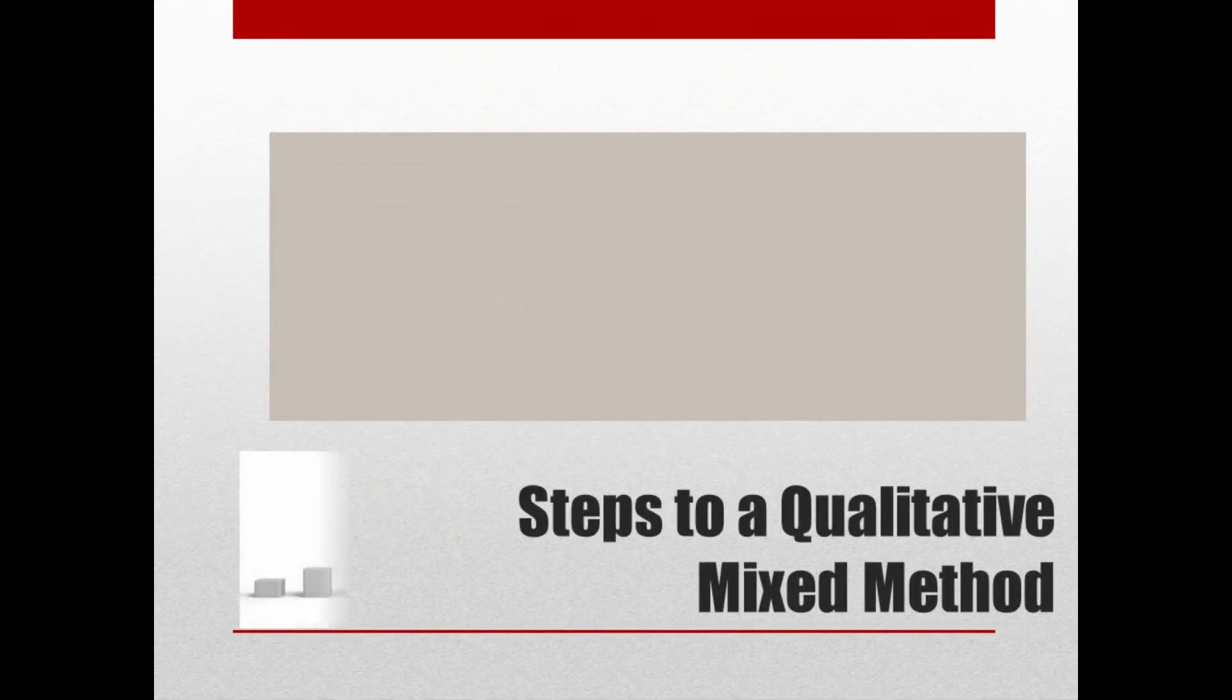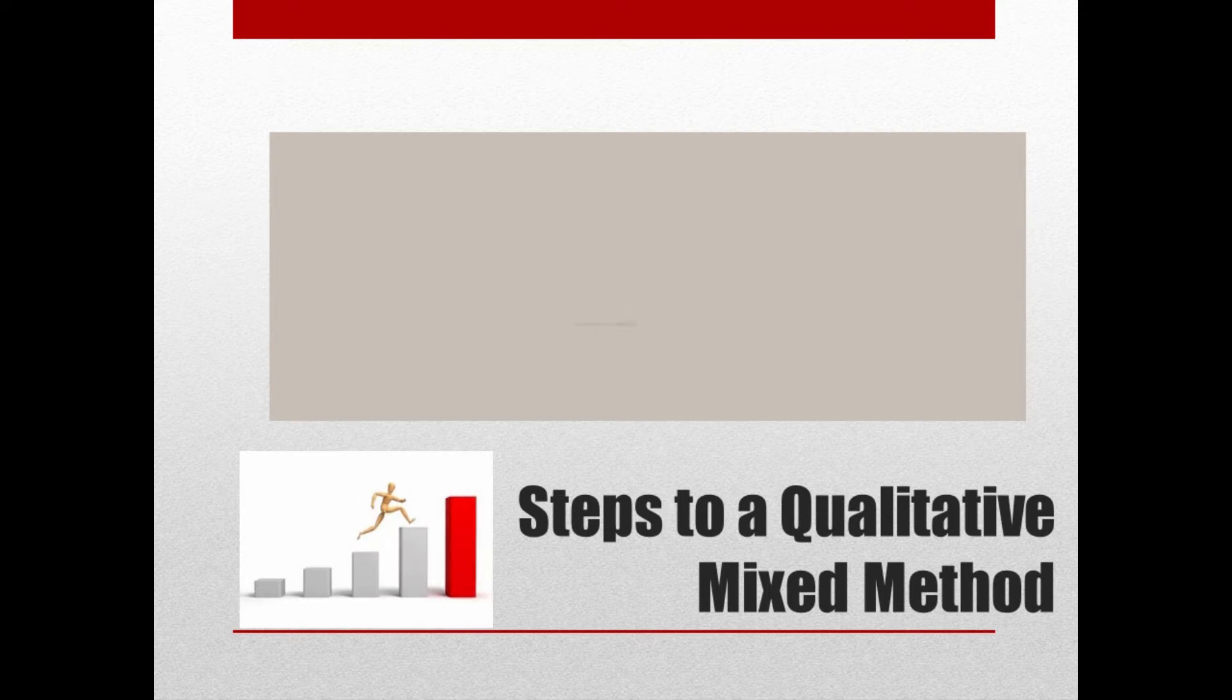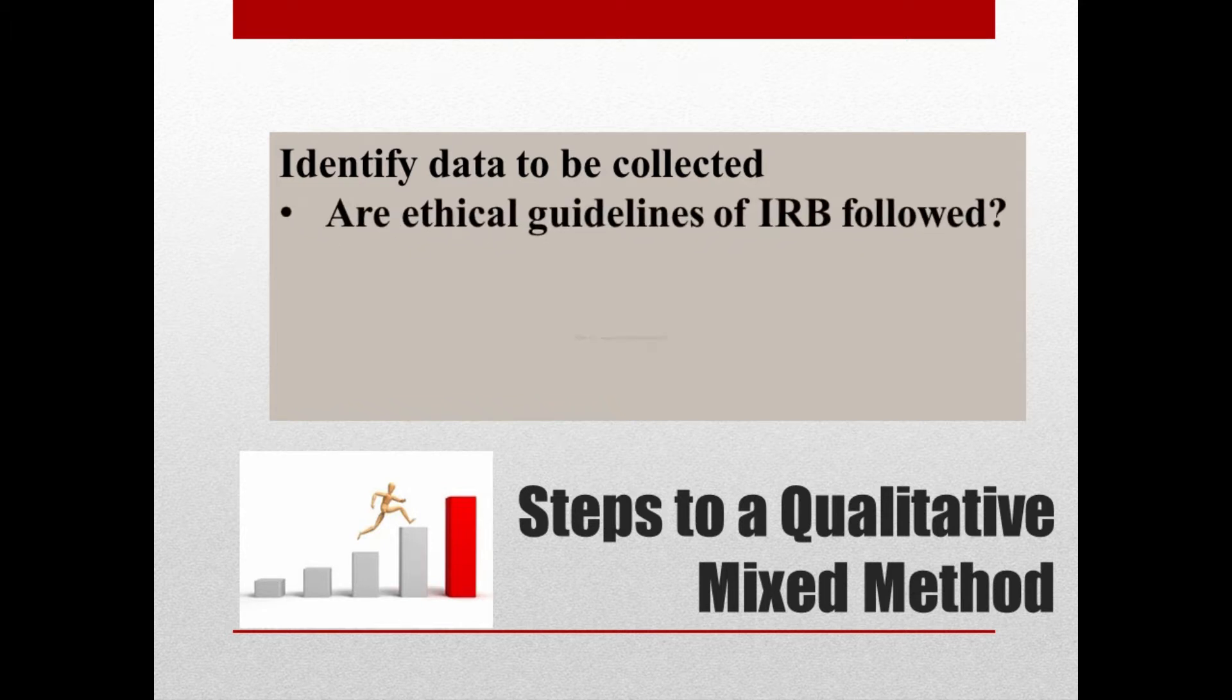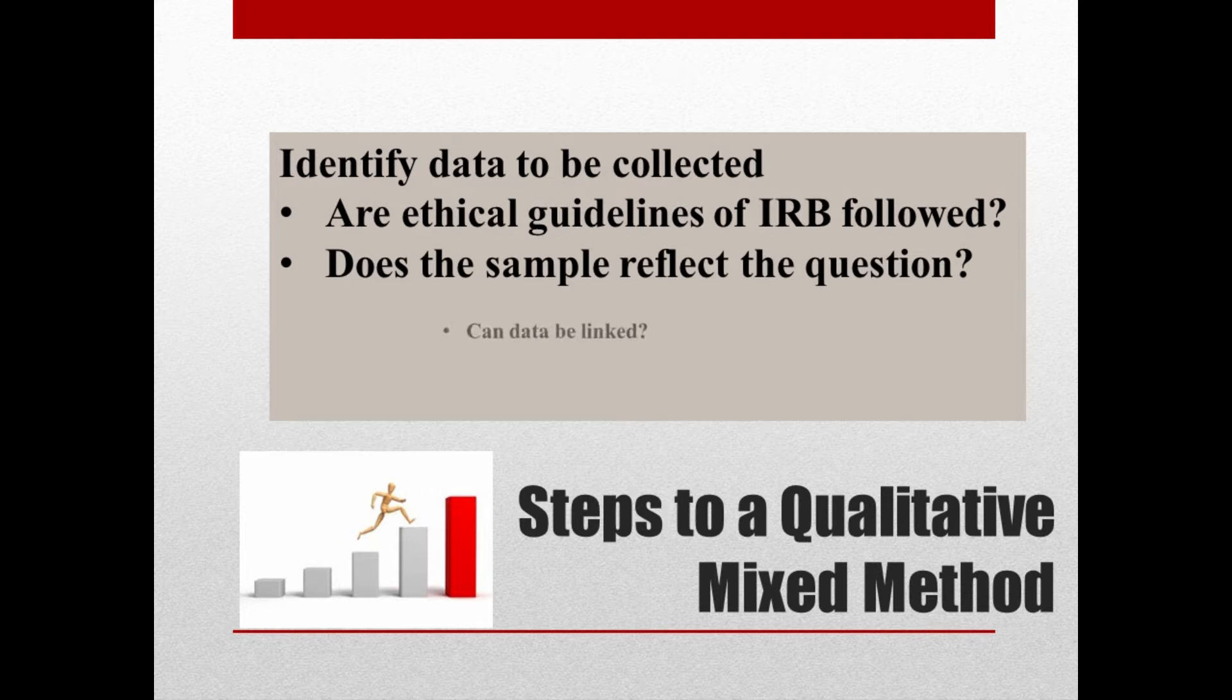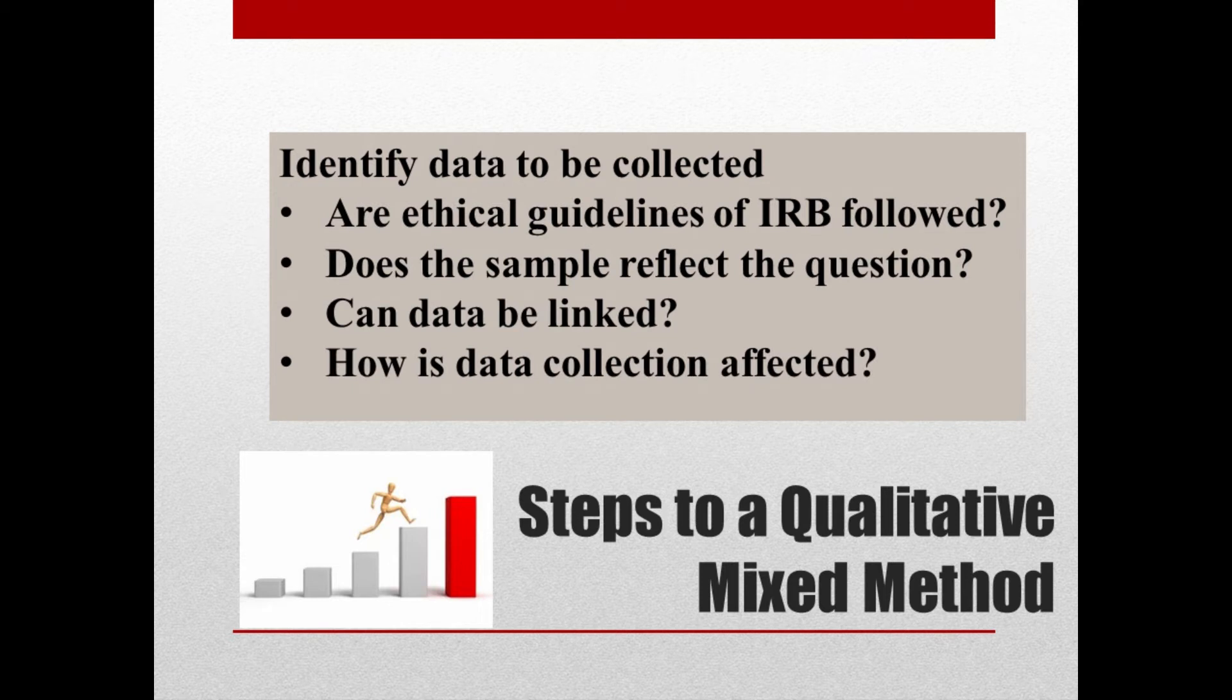The fourth step is to identify data to be collected. Are ethical guidelines of IRB followed? What is the target population? Does the sample reflect the nuances of the research question? Can data be linked between the two methods? And how will data collection be affected by the methods being used?